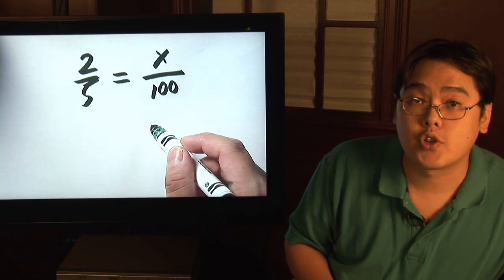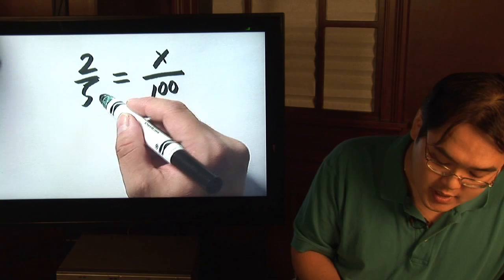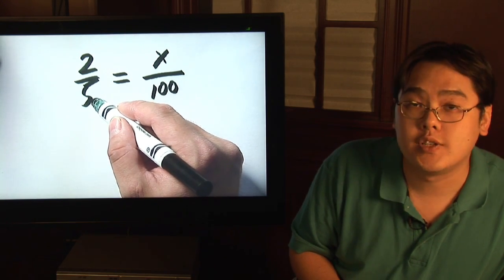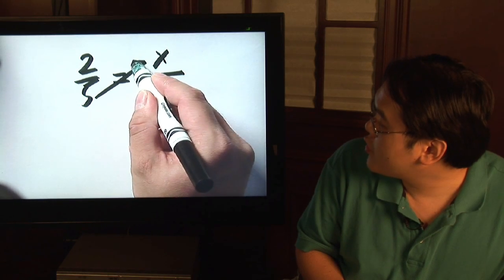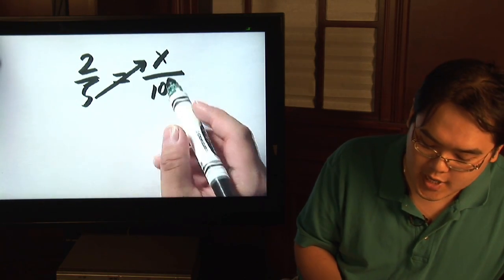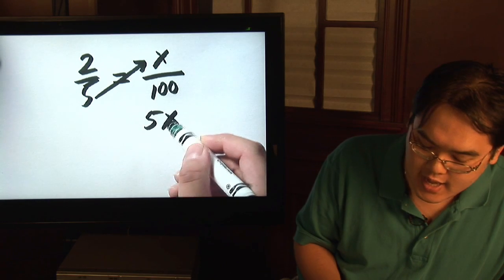All you do from here is do the cross multiplication exercise. With cross multiplication, you take the denominator on one side and then you multiply it with the numerator on the other side. So, 5 times x is going to give you 5x.